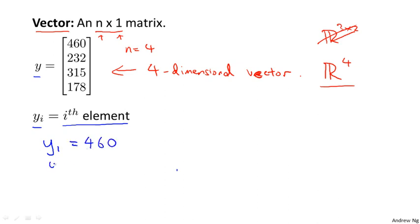You know, y_2 is equal to the second element, 232, y_3 is equal to 315, and so on. And only y_1 through y_4 are defined because this is a four dimensional vector.